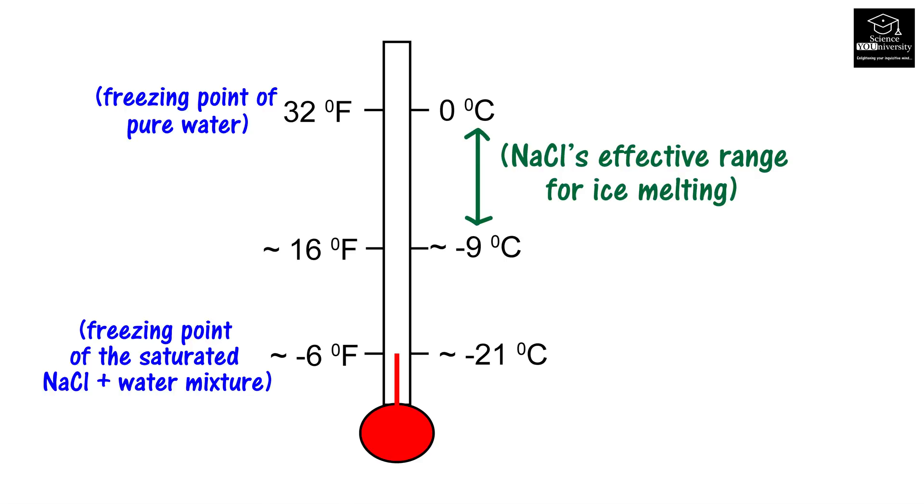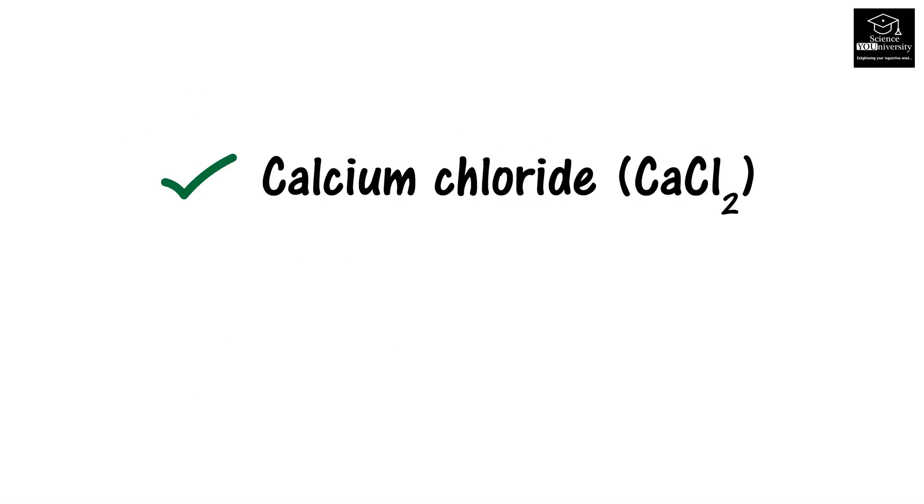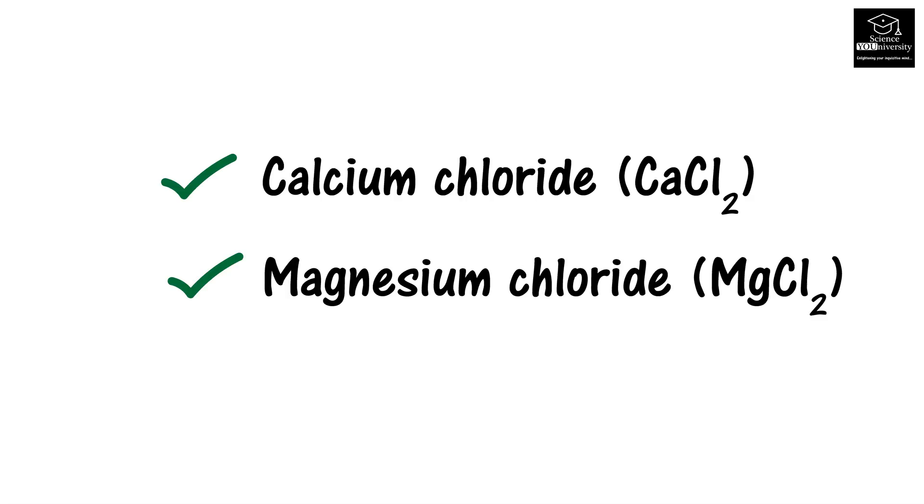Rock salt is not effective below minus 9 degrees Celsius, or 16 degrees Fahrenheit. Below this temperature, calcium chloride (CaCl₂) and magnesium chloride (MgCl₂) can be used as alternatives to rock salt. But they are not cheap or readily available as rock salt.